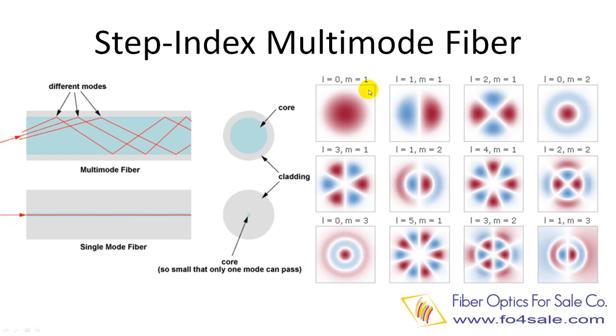The right side figure shows different modes transverse power distribution pattern at the far end of the fiber. The fundamental mode is the only mode that can propagate within the single-mode fiber. However, in the multi-mode fiber, many modes can propagate, and the end result is typically an overlap of all modes.